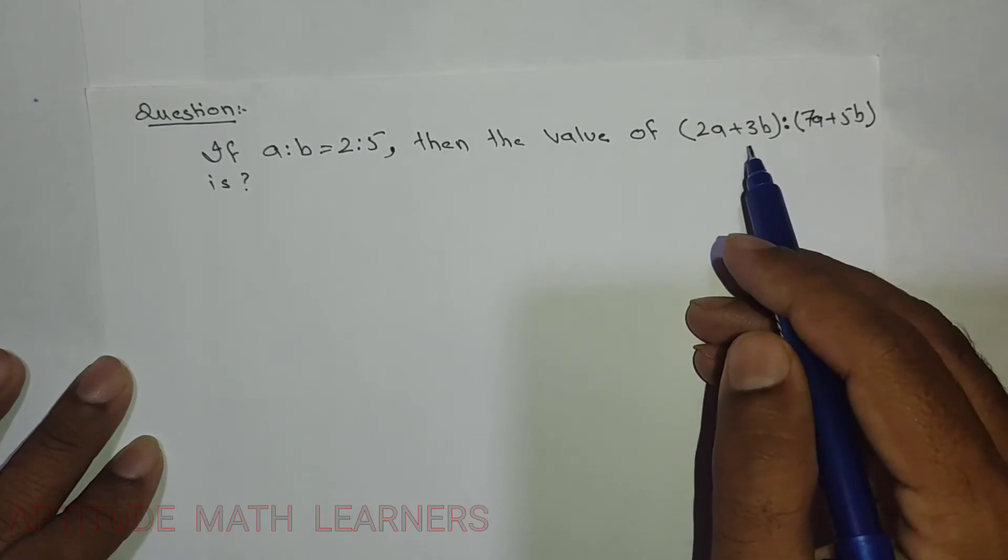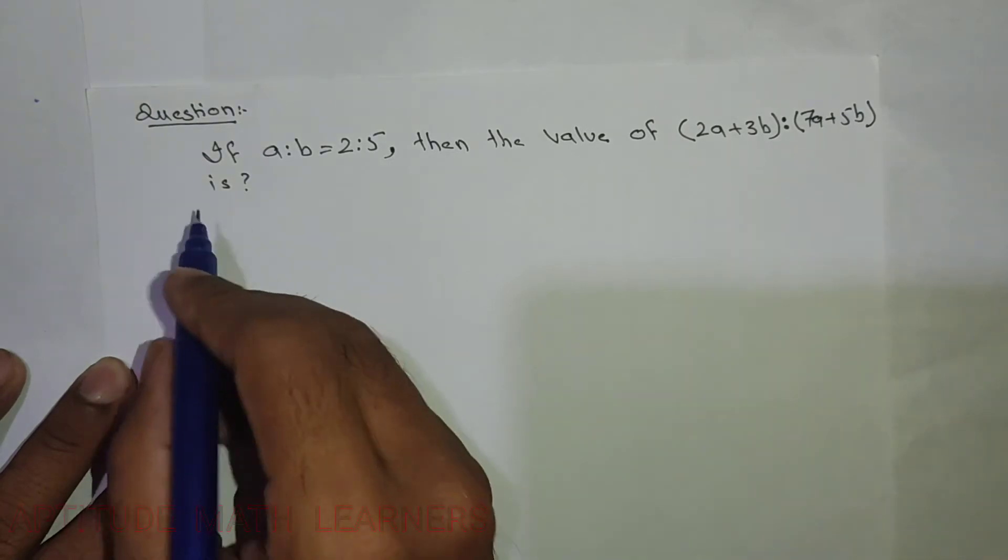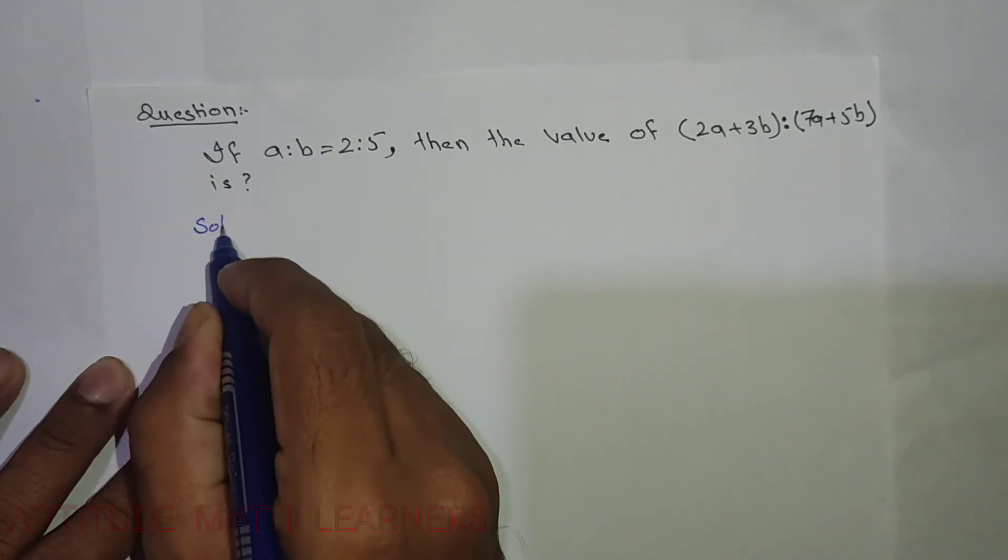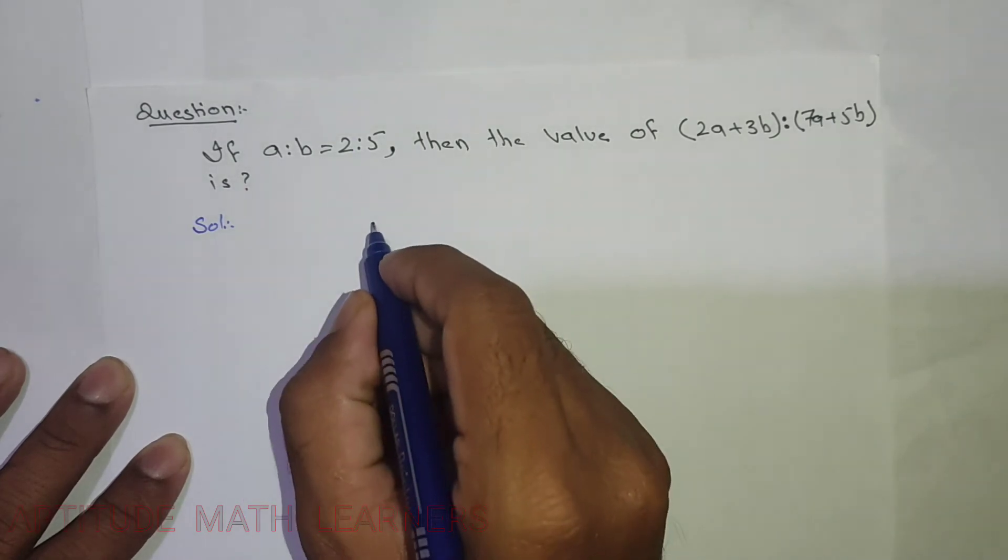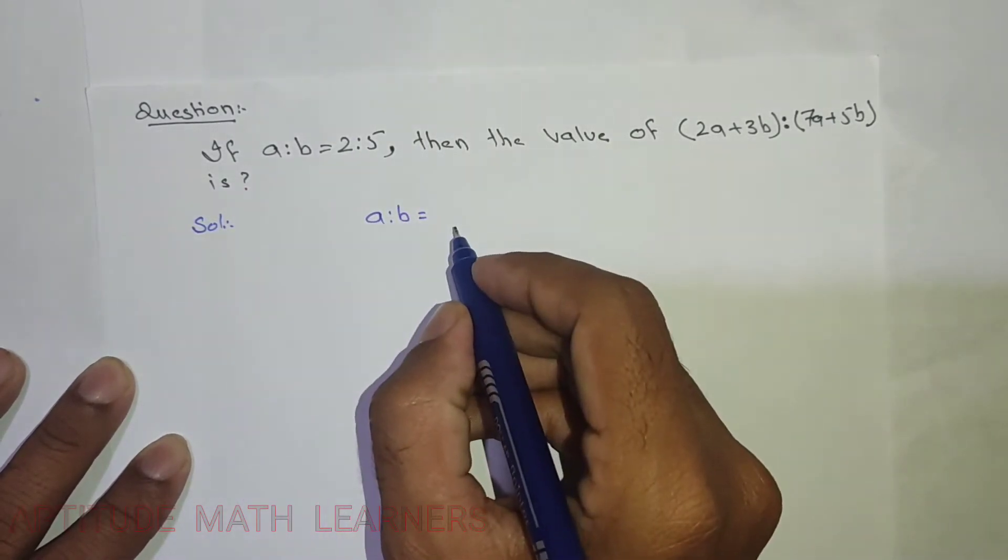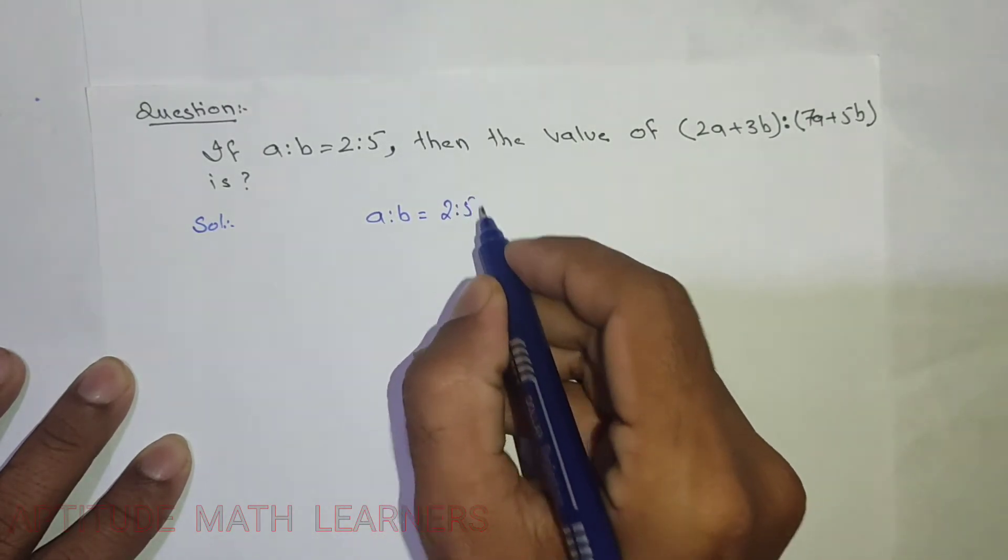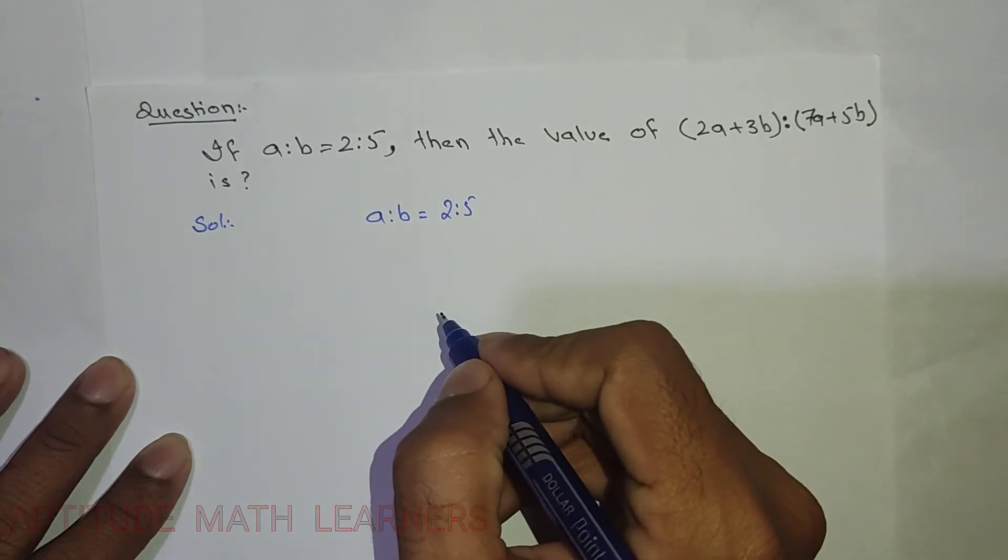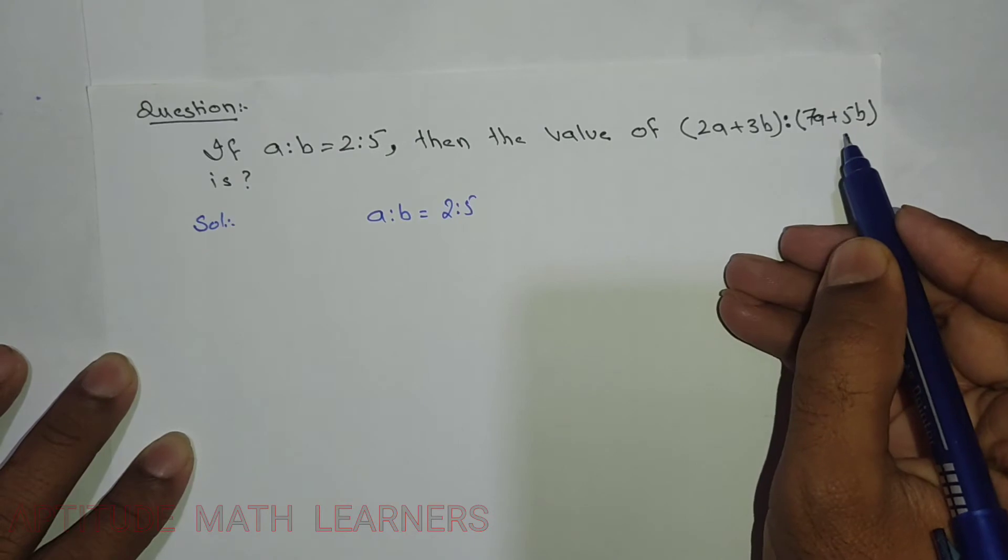Let's start. We have a:b = 2:5. If you see this portion, it is in ratio form.